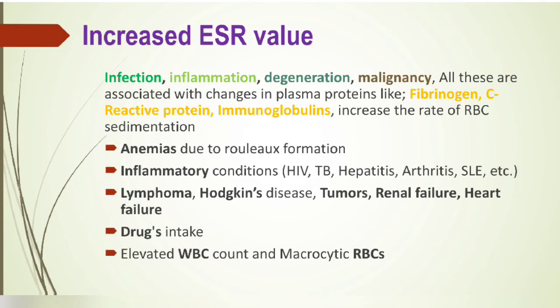Increased ESR values occur in infection, inflammation, degeneration, and malignancies — all of which raise fibrinogen, C-reactive protein, and immunoglobulins, increasing the rate of RBC sedimentation. Diseases associated with increased ESR include anemias, inflammatory conditions with rouleaux formation, SLE, arthritis, hepatitis, TB, lymphomas, Hodgkin's disease, tumors, renal failure, heart failure, drug intake, elevated WBC count, and macrocytic RBC defects.